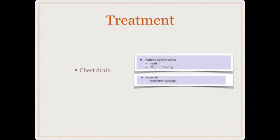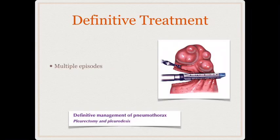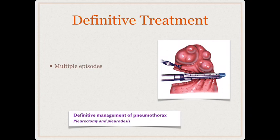For treatment: if the patient is comfortable and stable, we monitor SpO2 and may discharge without intervention. If the patient becomes dyspneic and SpO2 is falling, we insert an intercostal tube drain. For recurrent episodes — second or third time — if CT scan shows bullae, we excise them in a surgery known as bullectomy. If recurrent pneumothorax occurs with no bullae on imaging, we perform pleurodesis, instilling chemical agents like talc or tetracycline to fuse the pleural cavity and eliminate the possibility of further pneumothorax.